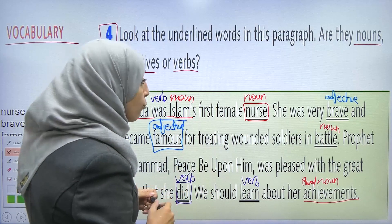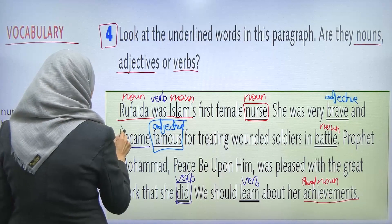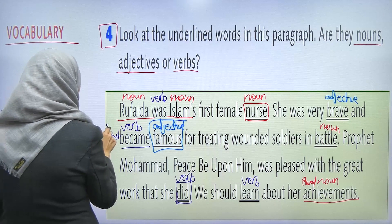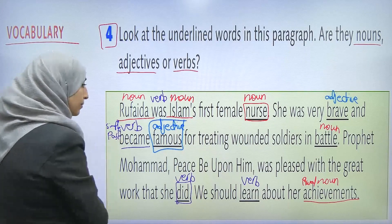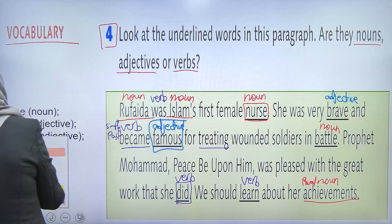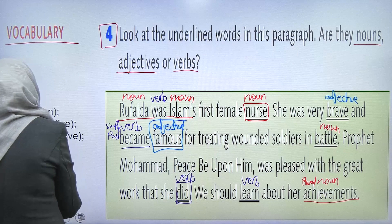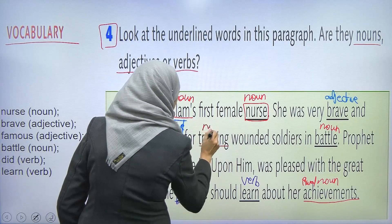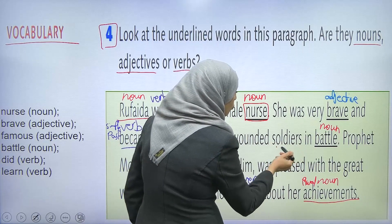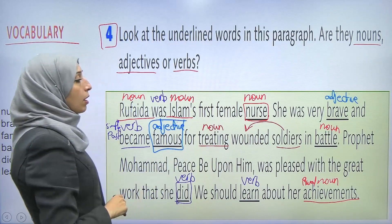She was very brave. And 'became' — أيش؟ بدها تكون verb. Verb. In which case? In the past. Simple past. For treating — treating يا مس، هونة هادي مش فعل، هونة اسم هادي. Noun. Treating is a noun — هونة العلاج. علاج مين؟ Wounded soldiers — الجنود اللي مصابين أو مجروحين. في الحرب. In battle.